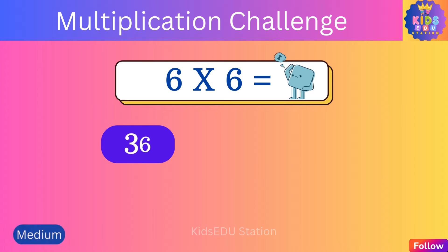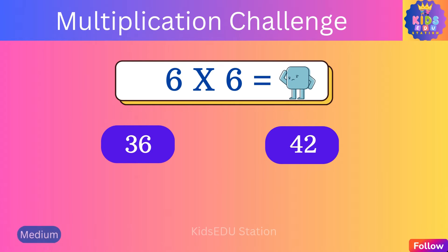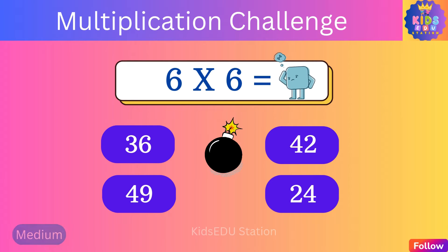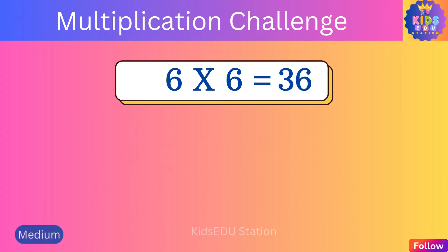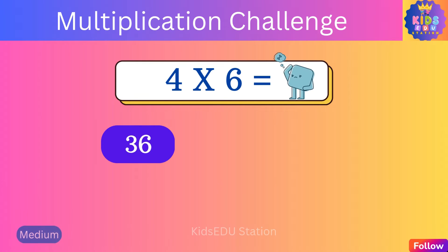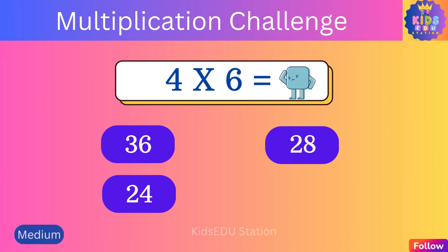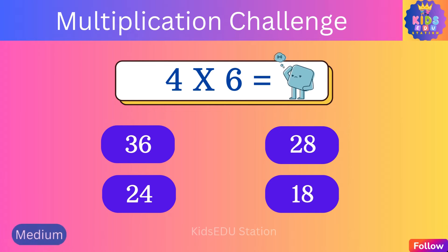What is six times six? Thirty-six, forty-two, forty-nine, twenty-four. Six times six is thirty-six. What is four times six? Twenty-eight, twenty-four, eighteen. Four times six is twenty-four.